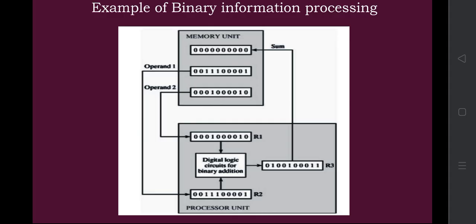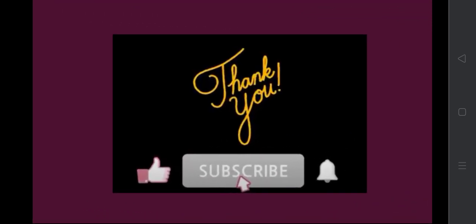This block diagram shows the operation of addition of two values: operand 1 and operand 2. In memory, operand 1 has 8-bit or 10-bit values according to the instruction or register size, and operand 2 is also present. Operand 1 is pushed to register R2 and operand 2 is pushed to register R1. A digital logic circuit performs the addition between the two operands, and the result is stored in register R3. R3 is then stored back to the memory unit. This is how binary information is fetched, processed, and stored back in memory registers.